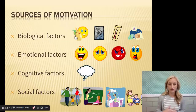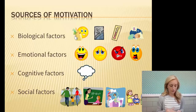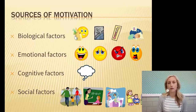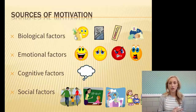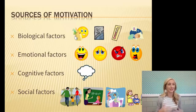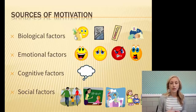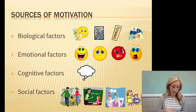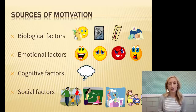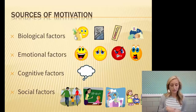There are four different factors to consider when thinking about where motivation comes from. Biological ones are very obvious: food, water, temperature regulation, sleep, and sex. Emotional factors include panic, fear, anger, love, and hatred — all of those motivate you toward different things. Cognitive factors include perceptions of the world, beliefs about what you can or can't do, and expectations about how others will respond. And social factors include reactions from friends, family, teachers, media, and other sociocultural influences.